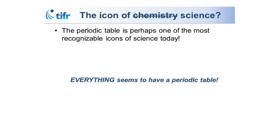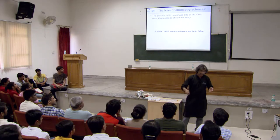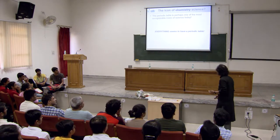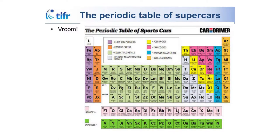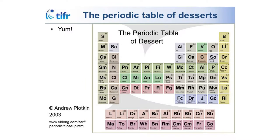The periodic table is no longer just restricted to chemistry — it's an icon of science. Every time somebody wants to categorize something, they make a periodic table. You can have the periodic table of sports cars, or even better, the periodic table of desserts, where you have all the sweeteners — sugar, honey, corn syrup, maple syrup — fats like butter, milk, cream, fruits like lemon, lime, orange, banana, apricot, alcohols like marsala, brandy, whiskey, rum, and nuts like pecan, cashew, pistachio. People arrange anything in a periodic table.